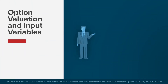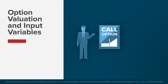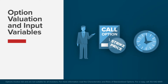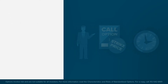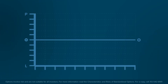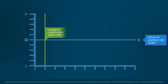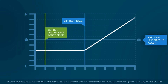Call options convey to the buyer the right, but not the obligation, to purchase a set number of shares of an underlying asset at a predetermined price, known as the strike price, prior to the time that the option contract expires. A call option buyer does this with the expectation that the price of the underlying asset will rise at some point prior to expiration.